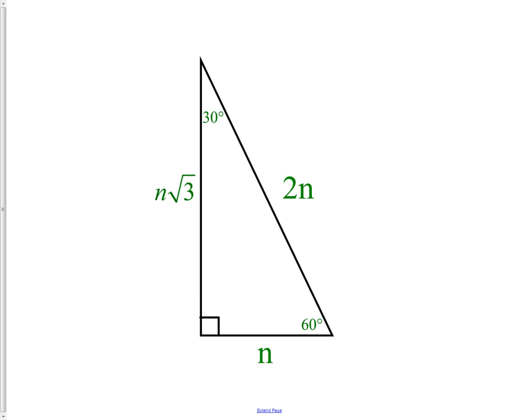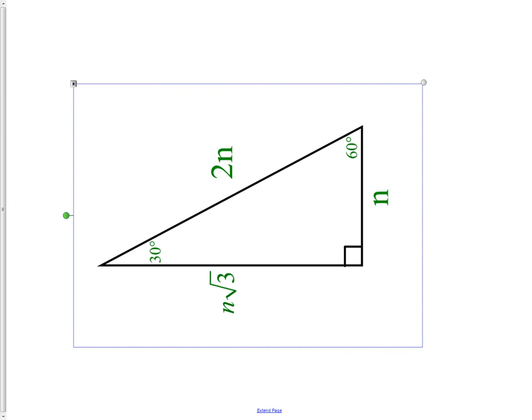It doesn't matter how we look at this picture. If we were to rotate this picture so that it was on its side, opposite the 30 will still be the n.